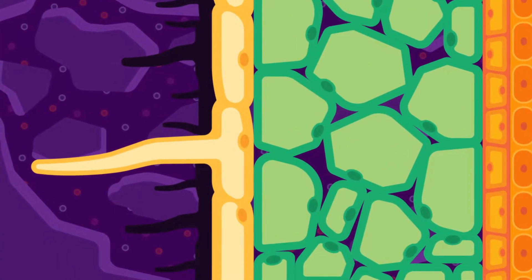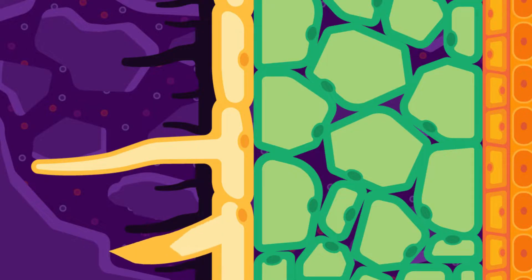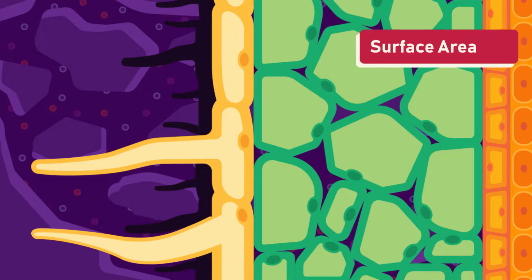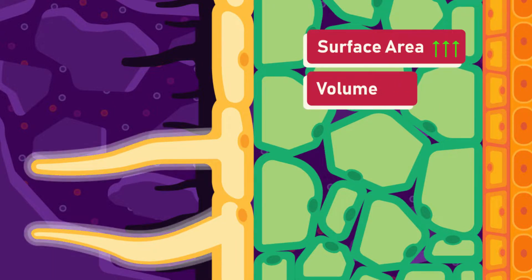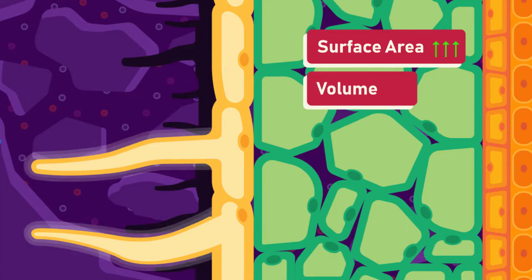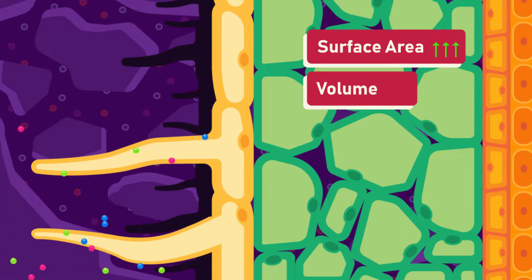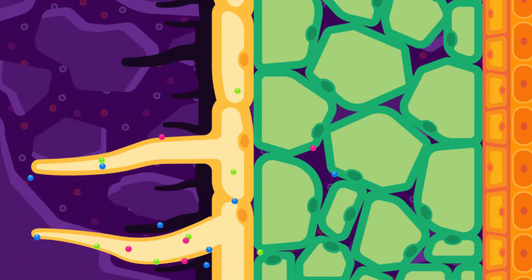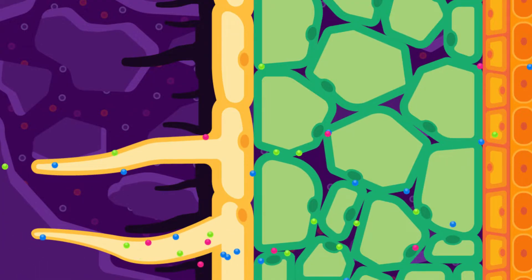Root hair cells are located in plants and are long and narrow in shape. Their specialised cell wall, membrane and vacuole extends to the cell's tail-like protrusion. This tail-like protrusion helps to increase the cell's surface area to volume ratio for efficient absorption of water and mineral salts from the soil.